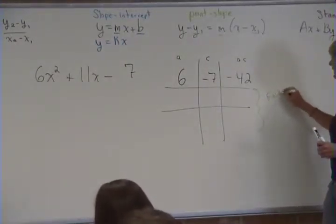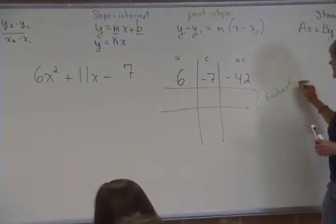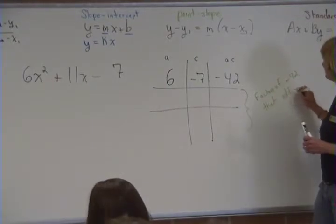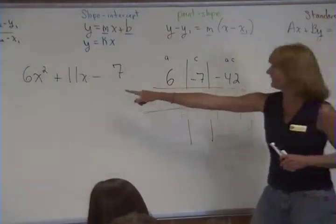Are factors of negative 42 that add to B. That add up to B. B is your middle term. B is 11.